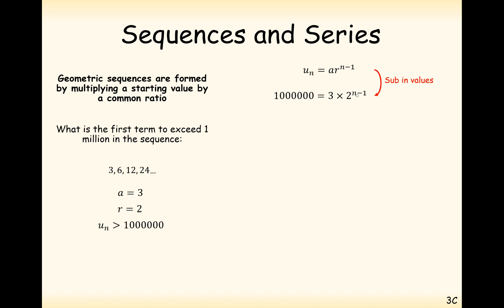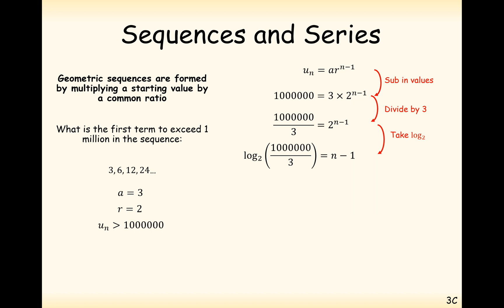This must be bigger than 1,000,000. We find the value of n that makes it exactly a million, then round up. Dividing through by 3 gives a million over 3. To isolate n minus 1, we take log base 2 of both sides. So log base 2 of a million over 3 equals n minus 1. Adding 1 gives us n. Calculating this value, we get n equals 19.35.